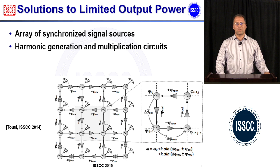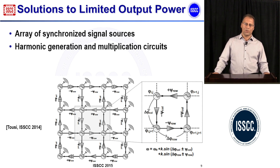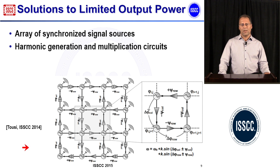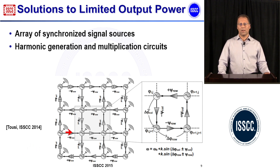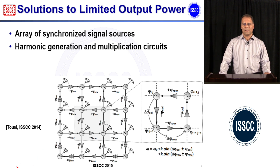As a solution for limited output power, the use of an array of synchronized signal sources is also suggested, where each source incorporates harmonic generation and multiplication circuitry to boost frequency. By synchronizing these harmonic generators on chip, maximum output power can be increased. An example is shown here where 16 element resonators and radiators were designed and synchronized together to achieve high output power — a paper based on this idea was presented at ISSCC 2014.